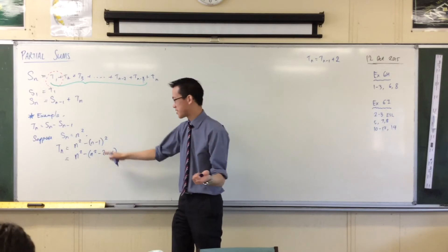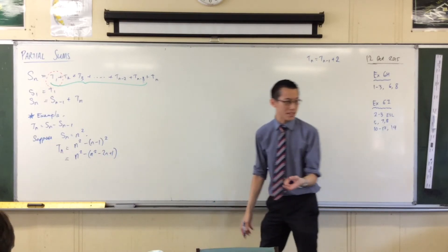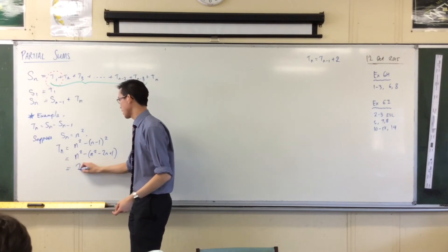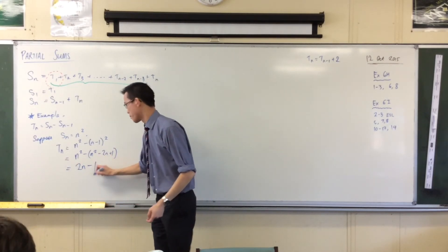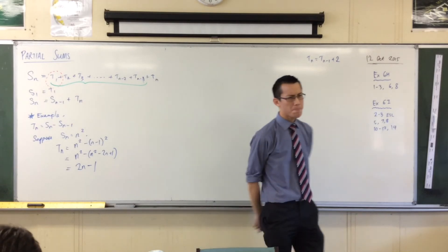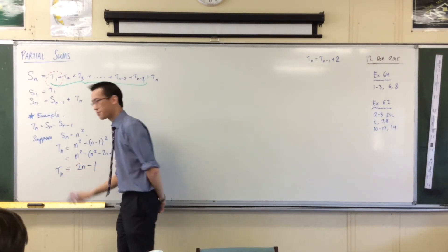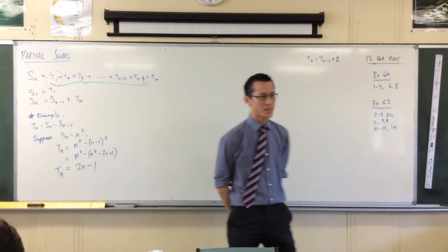What's going to happen with this negative? The n squareds are going to cancel. There's a double negative in front of the 2n, and then there will be a minus 1. This is the nth term. Hold on a second.